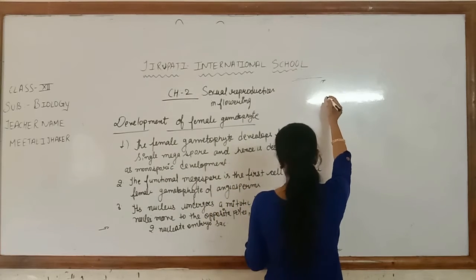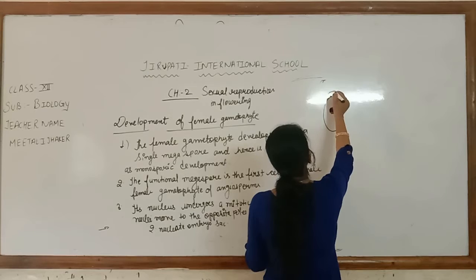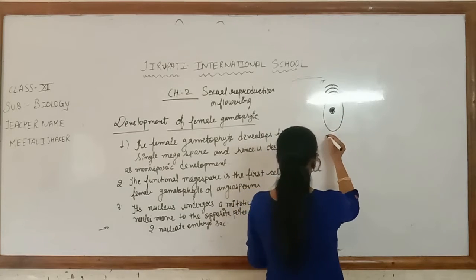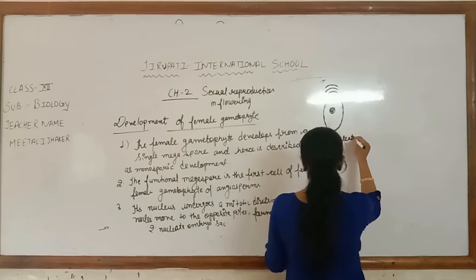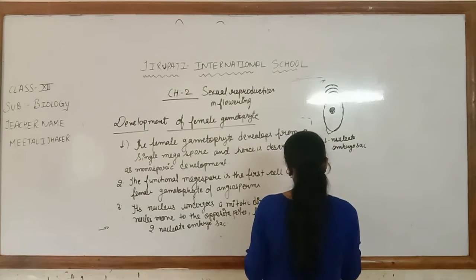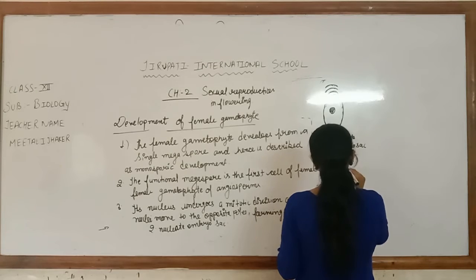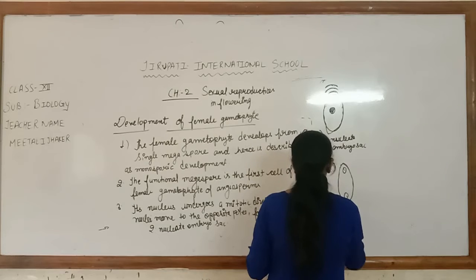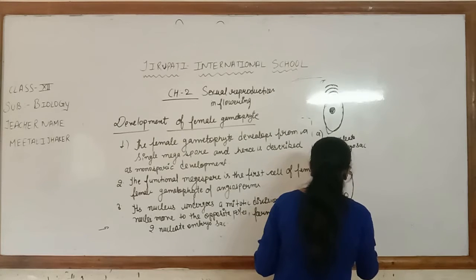I'll draw a simple diagram. Suppose this is the chalazal end and this is the micropylar end — it is called an asymmetric shape. So first we have the one-nucleate embryo sac. In the second stage, the functional megaspore becomes the two-nucleate embryo sac.